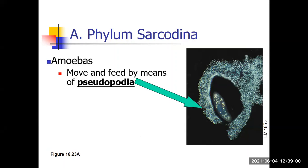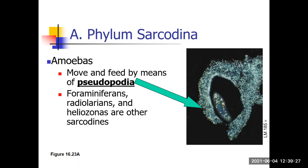Here are some other sarcoidines: forams, radiolarians, heliozoans. They all move the same way — by cytoplasmic streaming. Sometimes there's an endoplasm and ectoplasm that looks like cytoplasm within a cytoplasm. The main thing you see is that these fake arms come out — pseudopodia. 'Pseudo' is the prefix for fake, and 'pod' has to do with feet — like a podiatrist, the foot specialist. So pseudopodia means fake feet. Those are the sarcoidines; they move with pseudopodia.